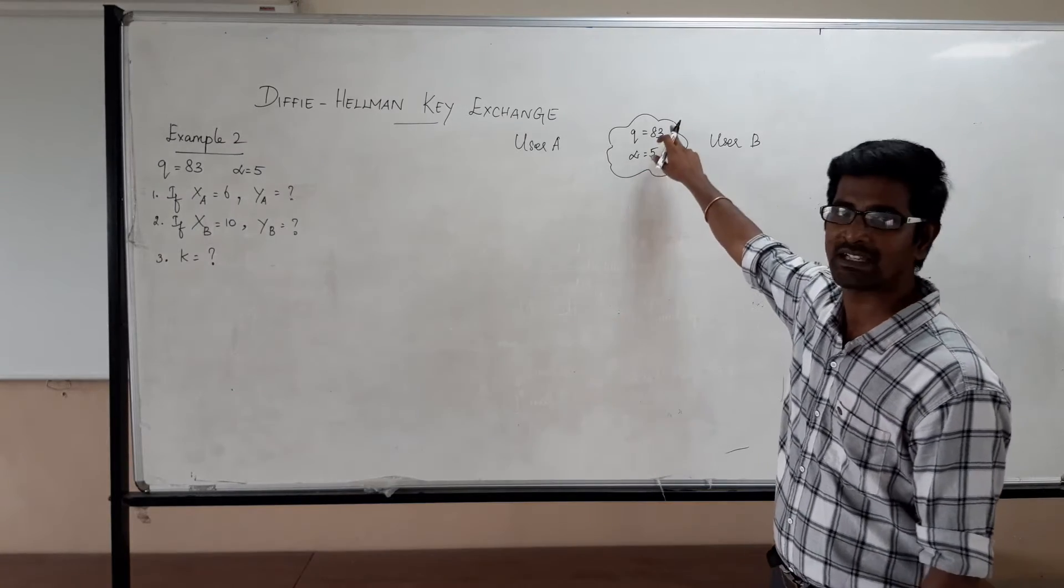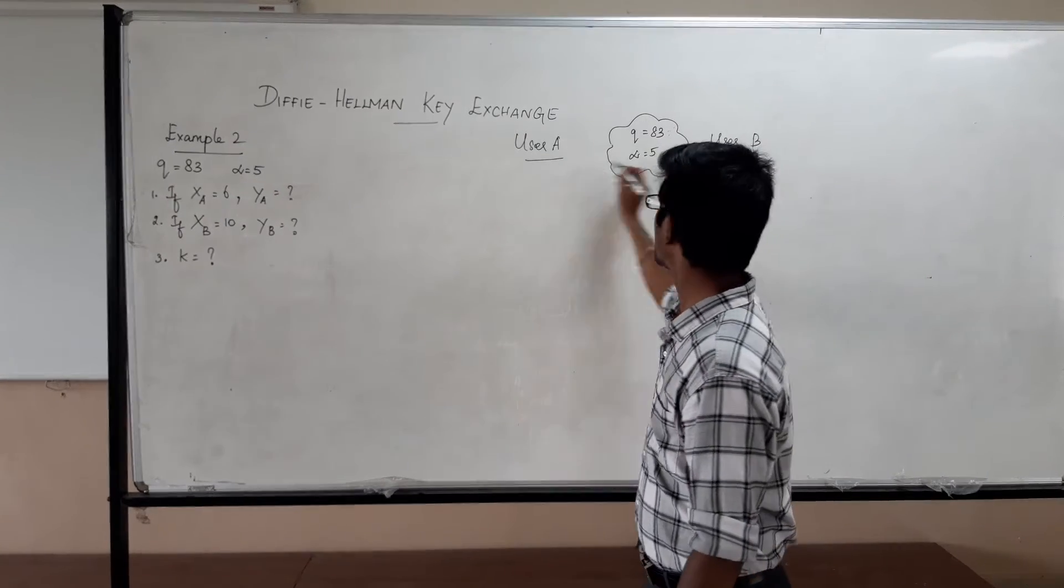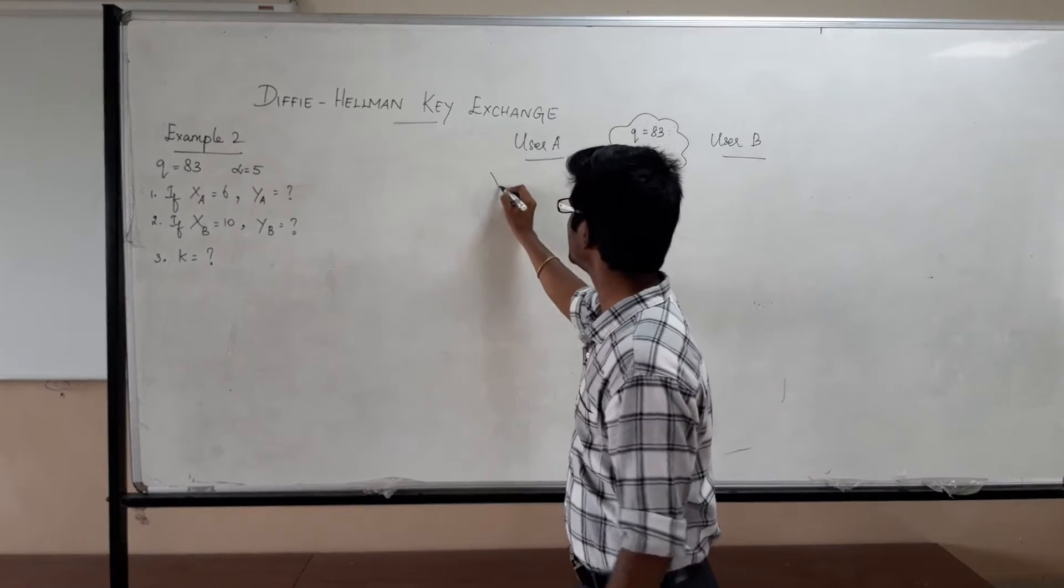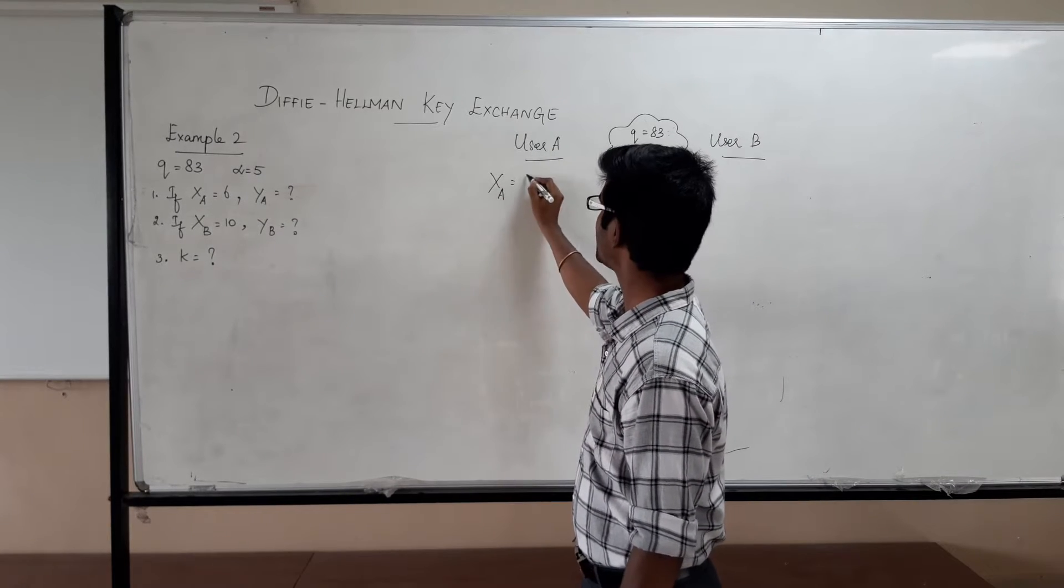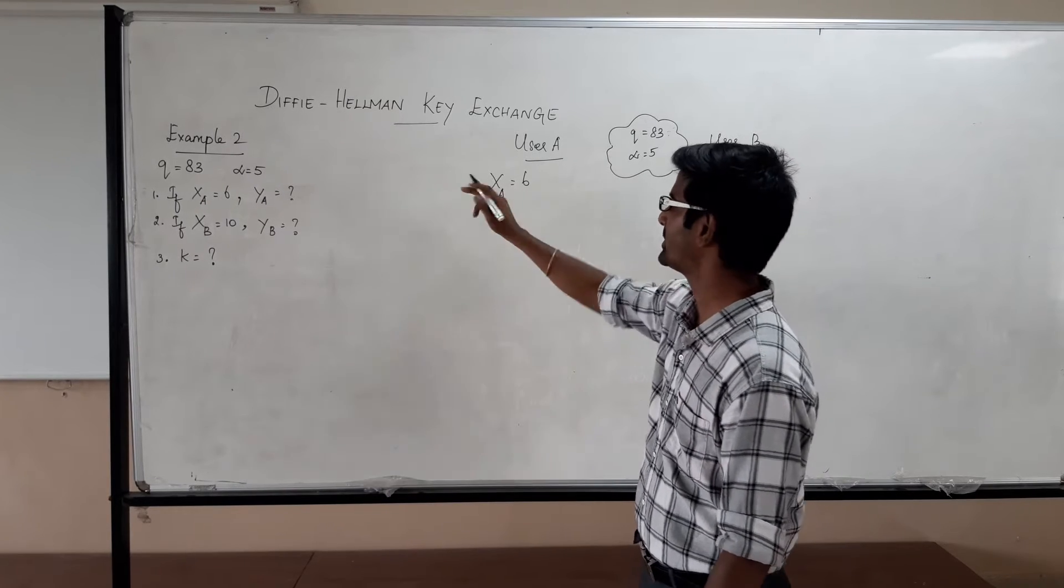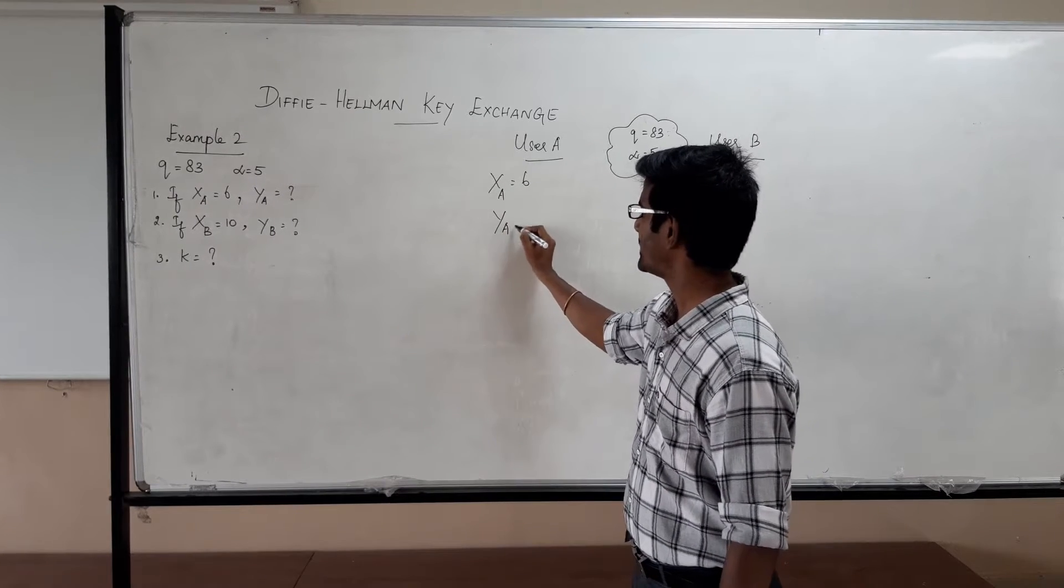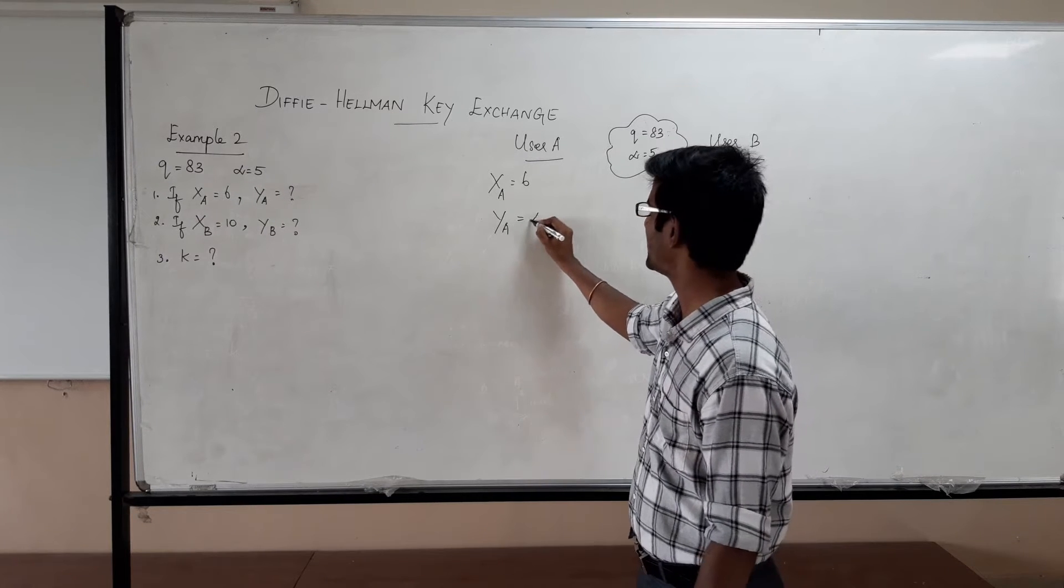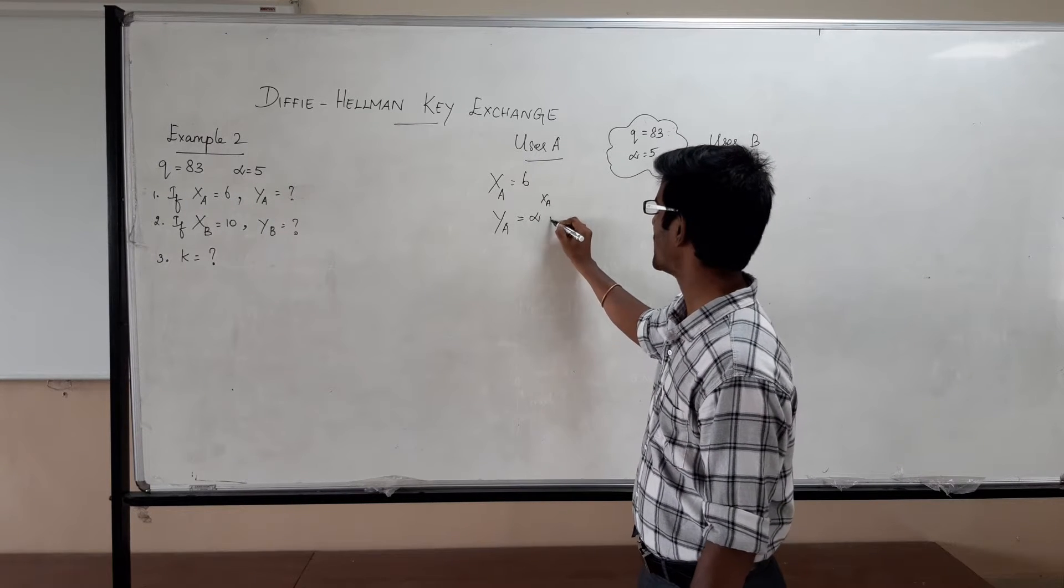Since the global elements are known, we will start with the process. Let us take XA. So user A is having the private key as 6. And we are asked to compute what is the public key. We know the public key of user A is alpha power XA mod Q.